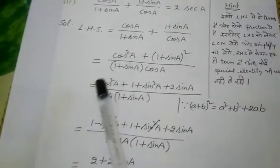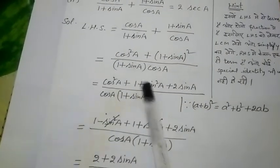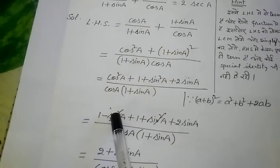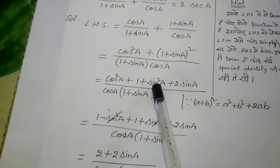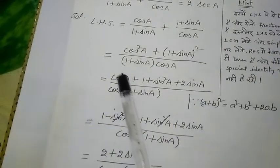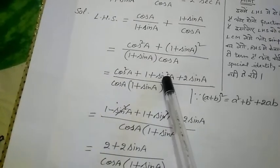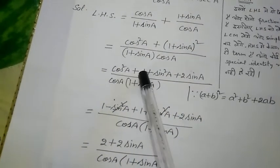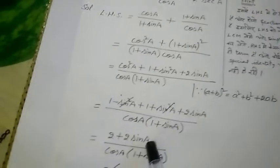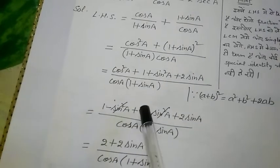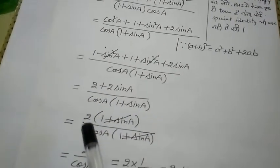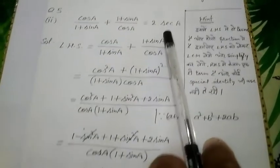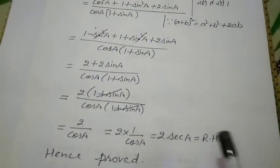Either write sin²θ + cos²θ together to make 1, or change cos²θ to (1 − sin²θ). This gives (1 − sin²θ) + (1 + sin θ)² in the numerator. Expanding: plus sin² and minus sin² cancel. We get 1 + 1 + 2 sin θ = 2 + 2 sin θ. Taking 2 common: 2(1 + sin θ). Denominator is cos θ × (1 + sin θ). The (1 + sin θ) cancels, giving 2/cos θ = 2 sec θ, which is the RHS.